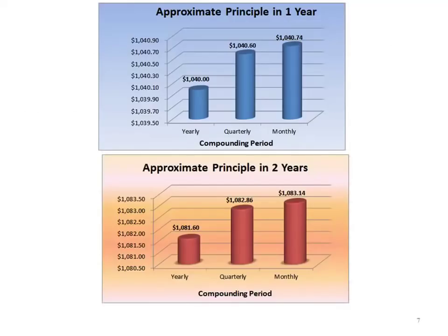Let's take a look at this in a graph. If we put that $1,000 in the savings account for one year, at the end of one year, if we compound it yearly we'll have $1,040 in our savings account. If we compound it quarterly, we'll have $1,040.60. If we compound it monthly, we'll have $1,040.74.